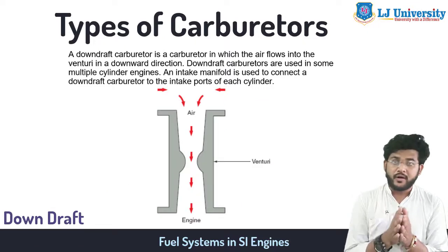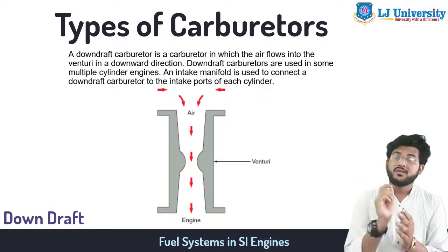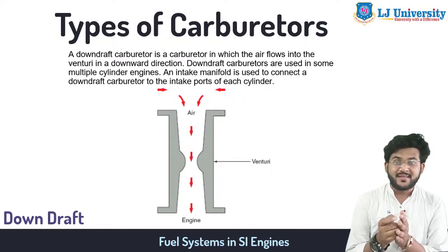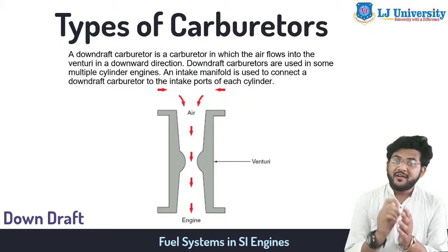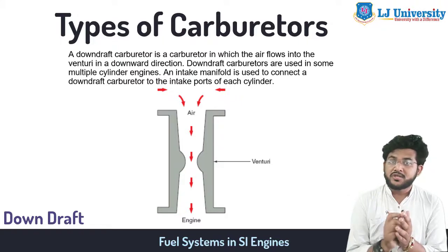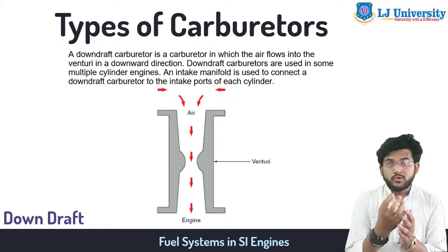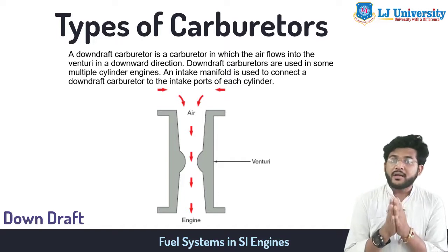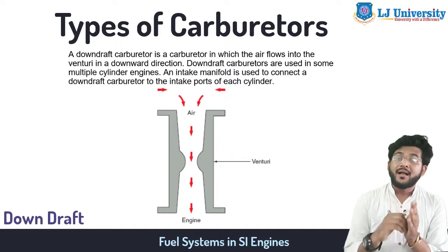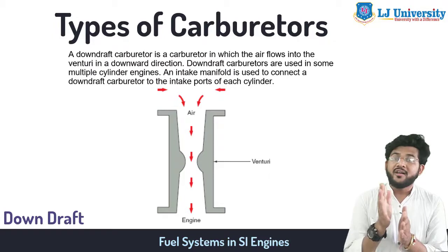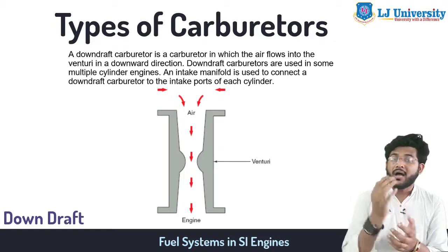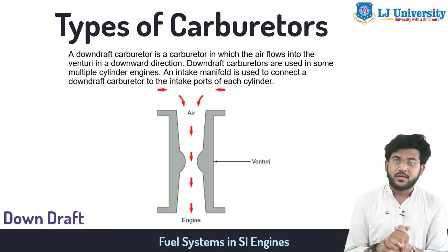A downdraft carburetor operates with lower air velocities and larger passages. This is because gravity assists the air-fuel mixture flow to the cylinder — the carburetor is above and the cylinder is below. The downdraft carburetor can provide a large volume of fuel when needed for high speed and high power output conditions.